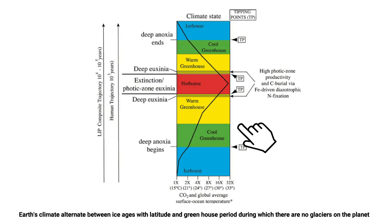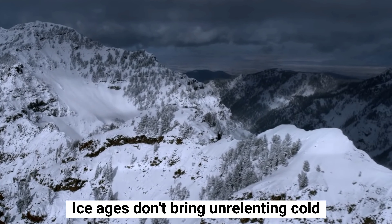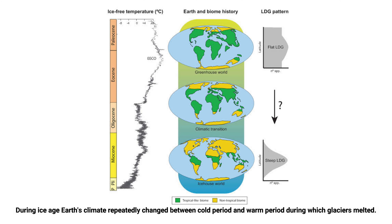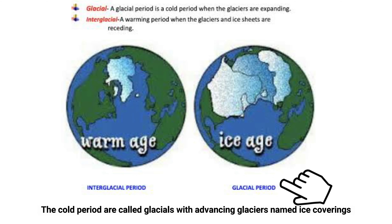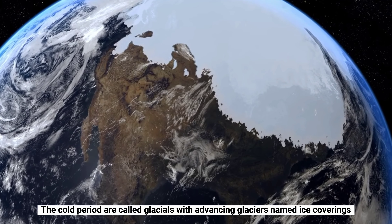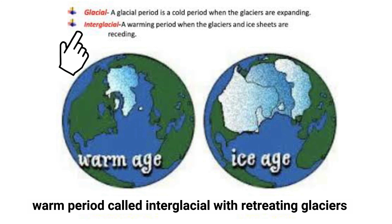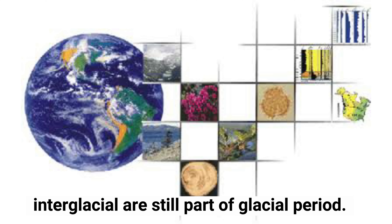An ice age is a period of colder than usual global temperature and bigger than usual glaciers and ice sheets. Earth's climate alternates between ice ages at high latitudes and greenhouse periods during which there are no glaciers on the planet. Ice ages don't bring unrelenting cold — Earth's climate repeatedly changed between cold periods and warm periods during which glaciers melted.